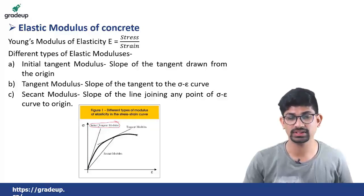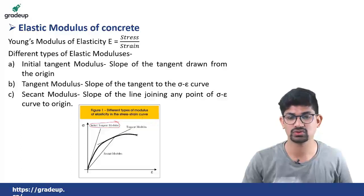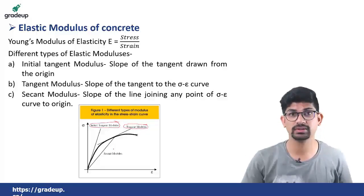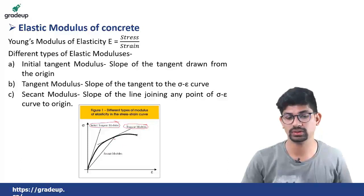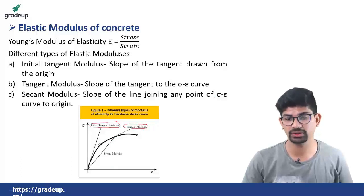The second is tangent modulus. It is the instantaneous modulus and can be denoted at any particular point. At any required point it can be drawn and the value of the tangent modulus can be obtained. It is the slope of the tangent to the sigma-epsilon curve. The third one is secant modulus, which gives total stress by total strain. From the origin to the point under consideration, you join these two points and obtain the value of stress and corresponding strain, giving the secant modulus — the slope of the line joining any point on the sigma-epsilon curve to the origin.